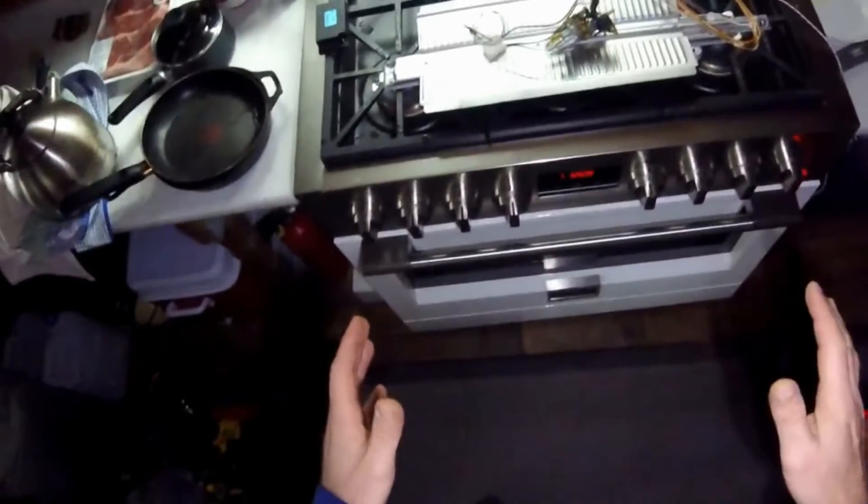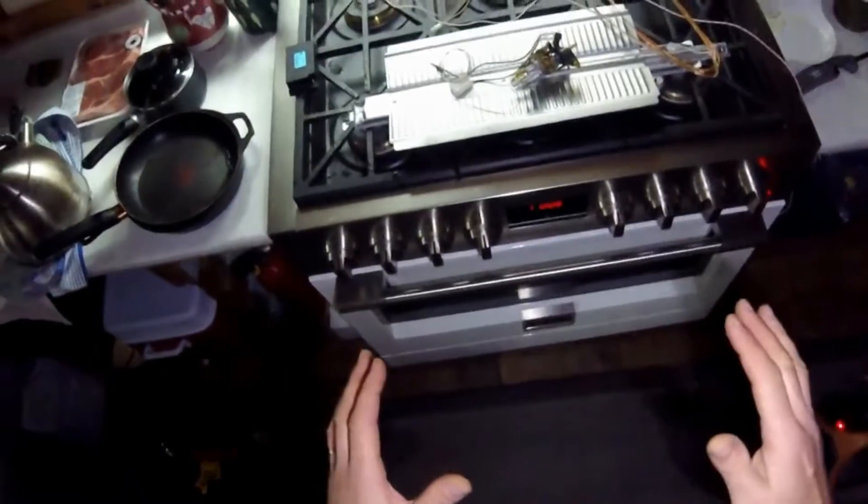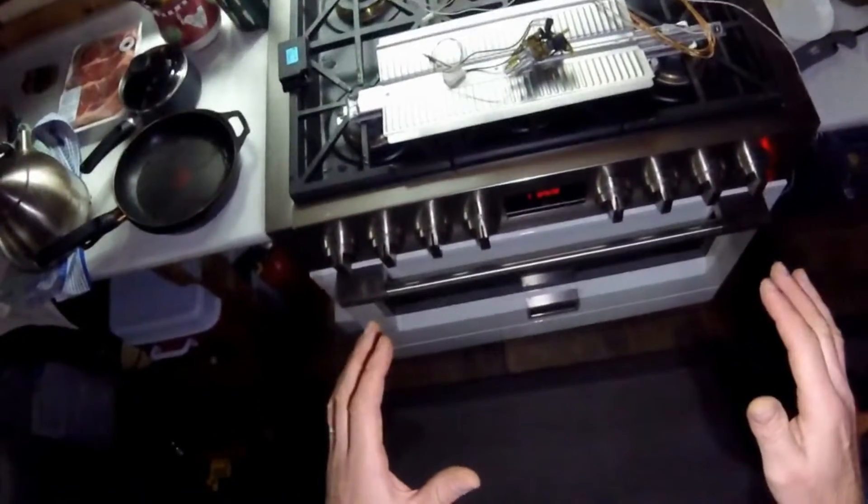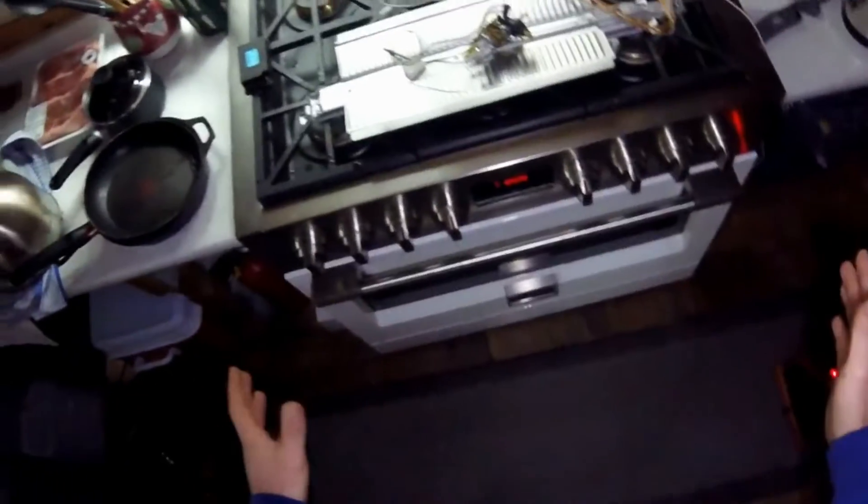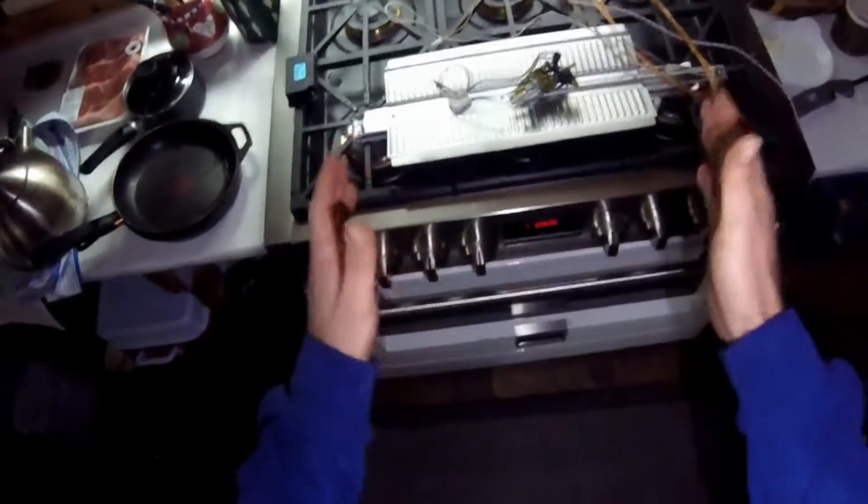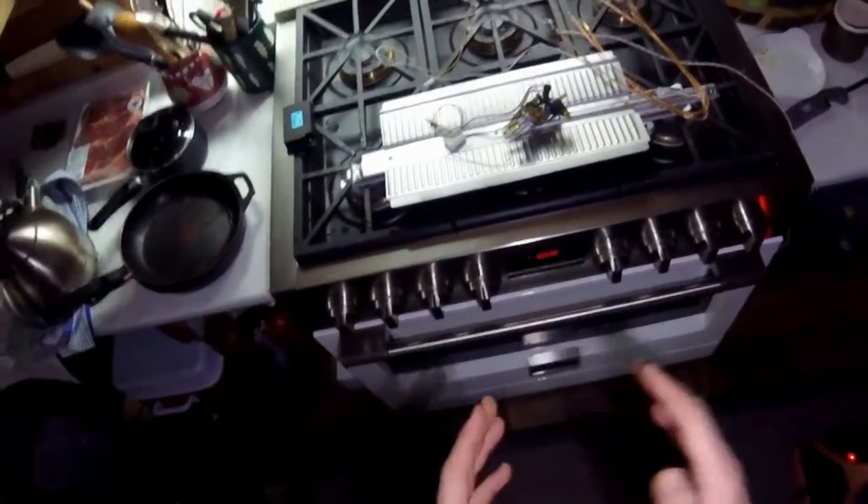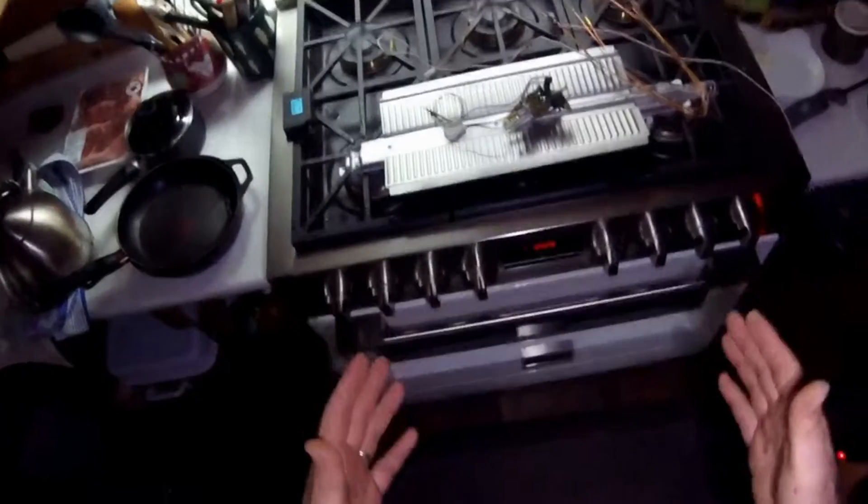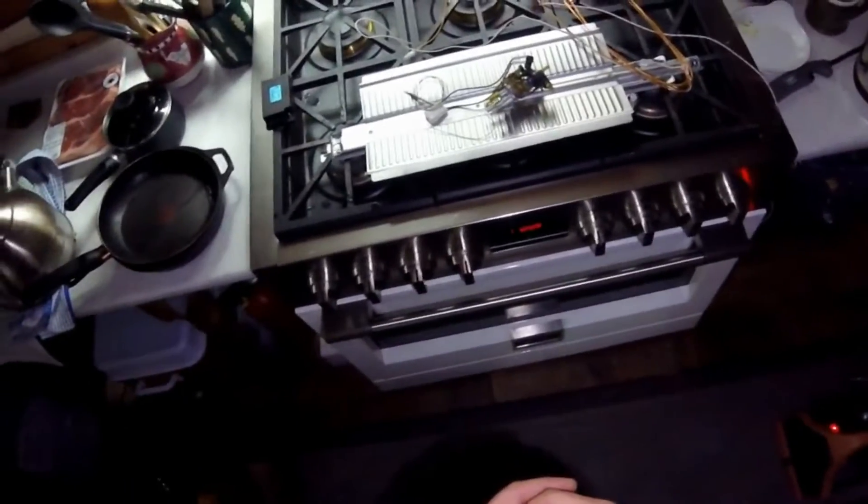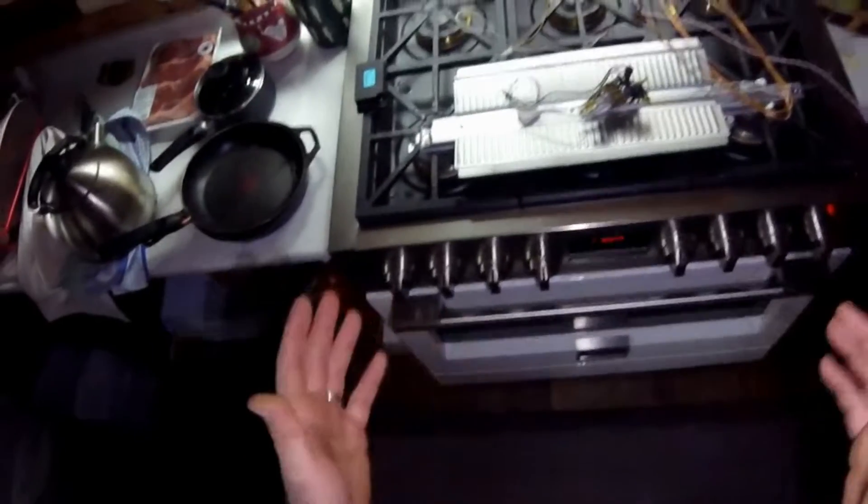So in this case, this is an F6 PGR, so pro gas range, 36 meaning 36 inches wide, six as in six burners, S1, so the first iteration of this unit or of this model. So F6 PGR 366 S1.